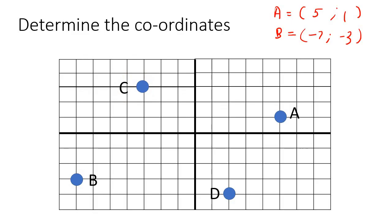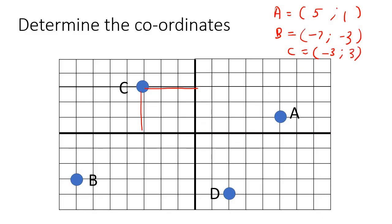Now we're going to look at C. If we look at C, it goes 1, 2, 3 to the left, and then it goes 1, 2, 3 up — so the x will be negative 3, but the y will be positive 3 because it's up. Now the last one is going to be D. With D, it's going to be 1, 2 to the right, and then for the y it goes 1, 2, 3, 4 — so that means it goes 4 down, so that's negative 4.